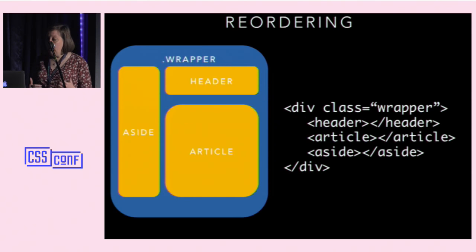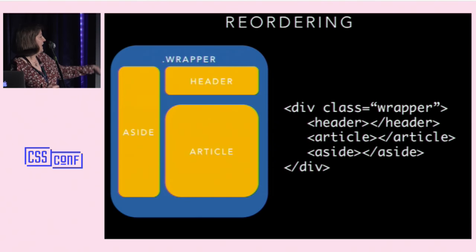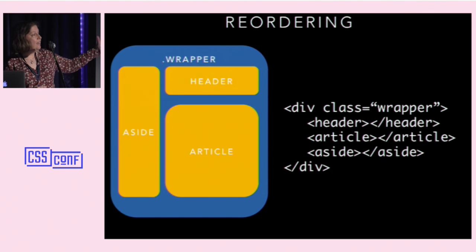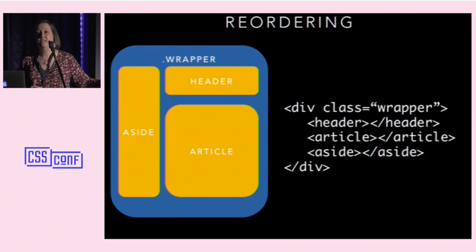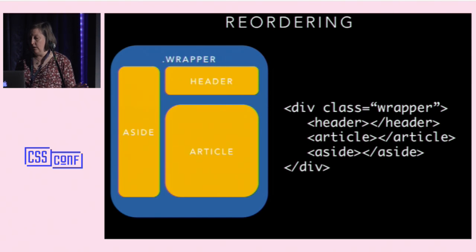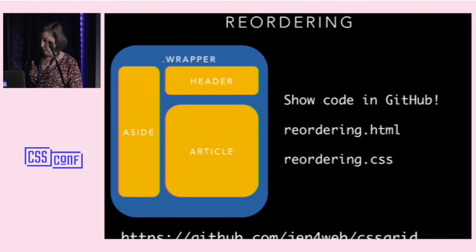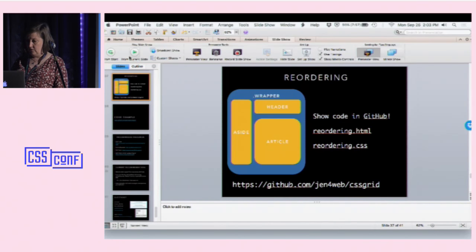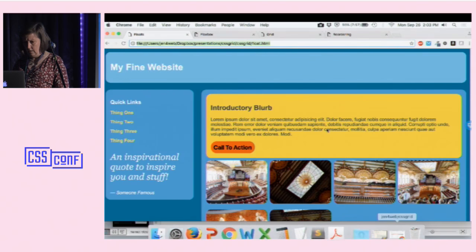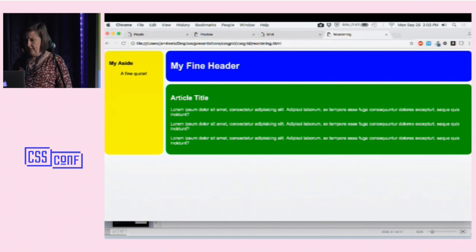If we think about reordering: we take the idea that I have my wrapper, and inside of that maybe I have a header, an article, and an aside. How might this kind of reordering actually work? I'm going to show that to you right now, just to point out that there is some code posted if any of you would like to access that. And then I'll go ahead and show you this in the browser.